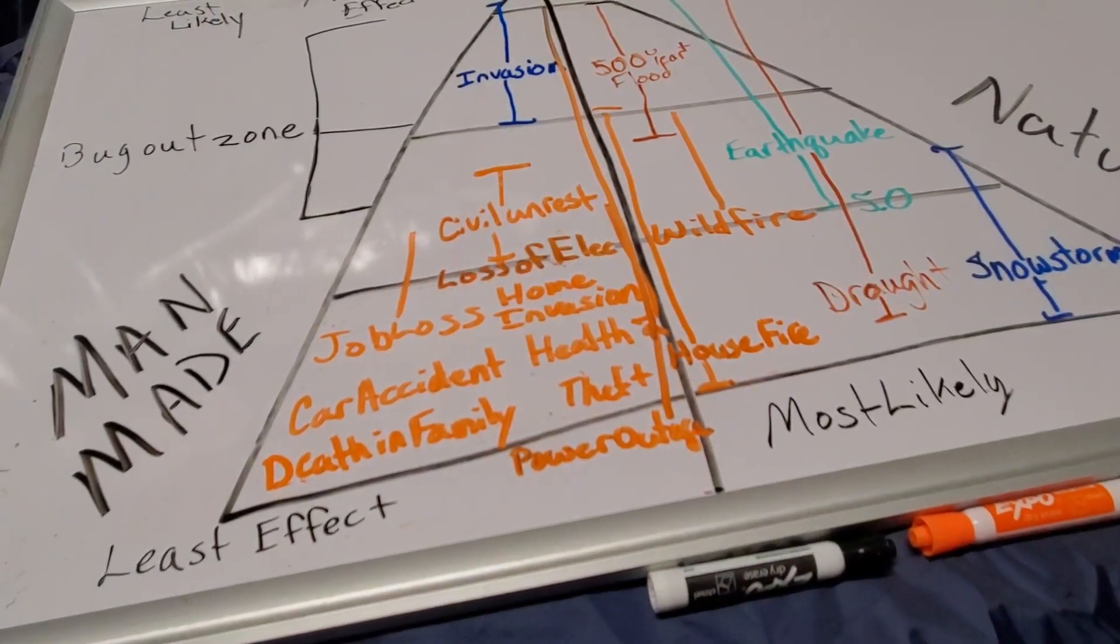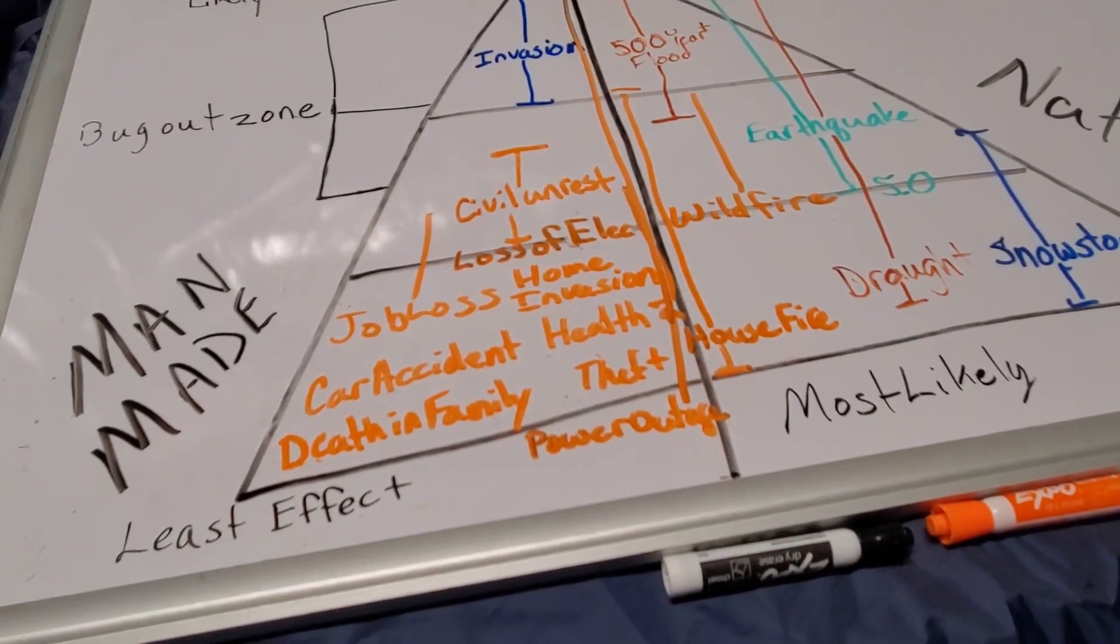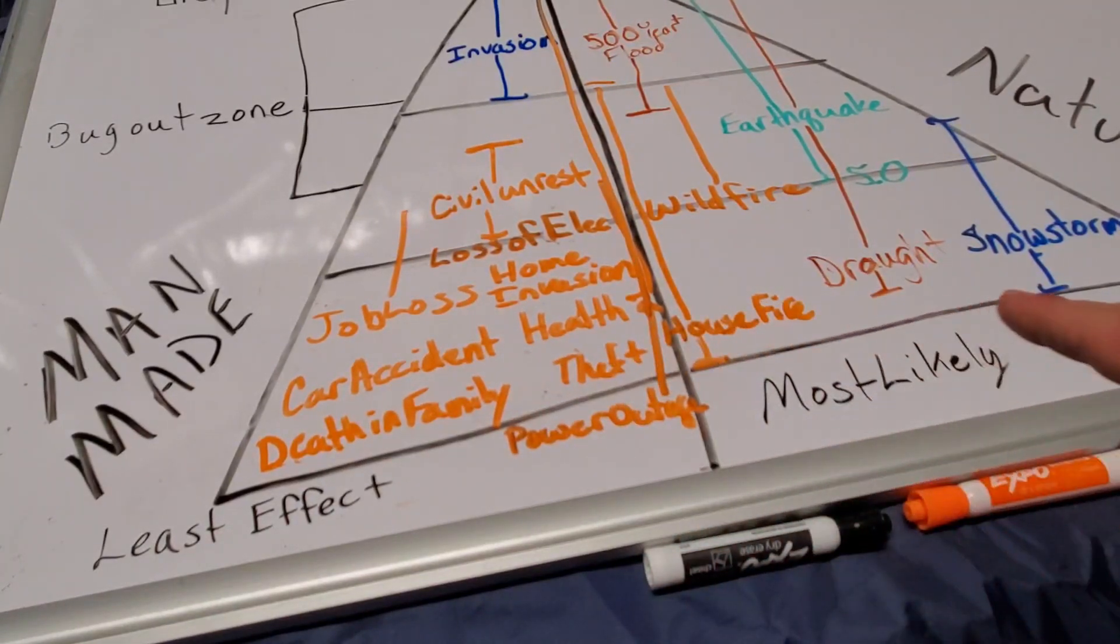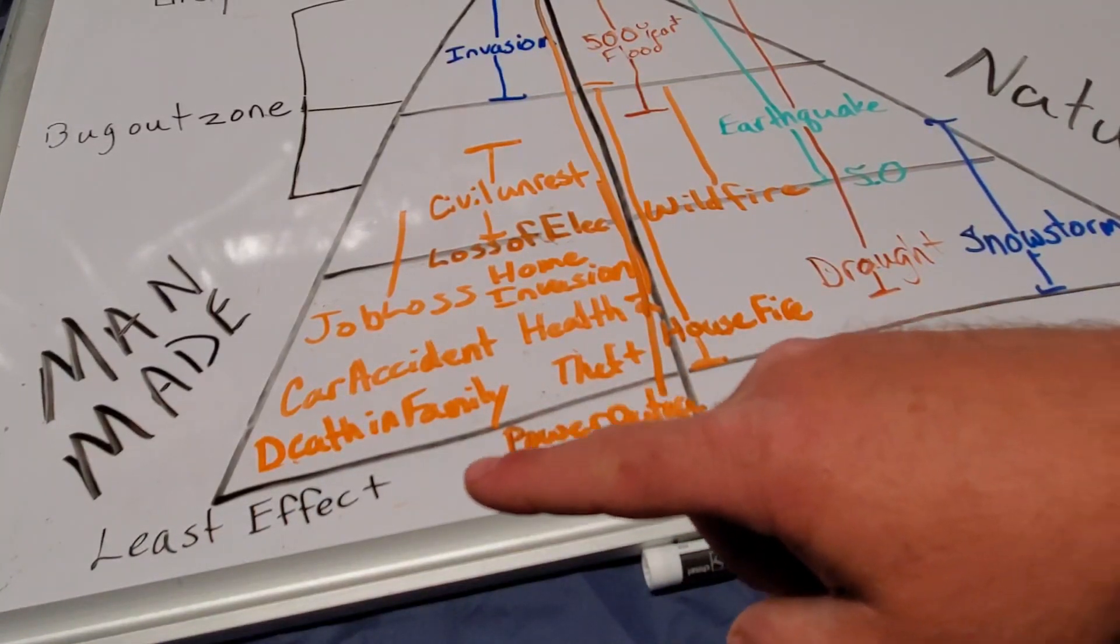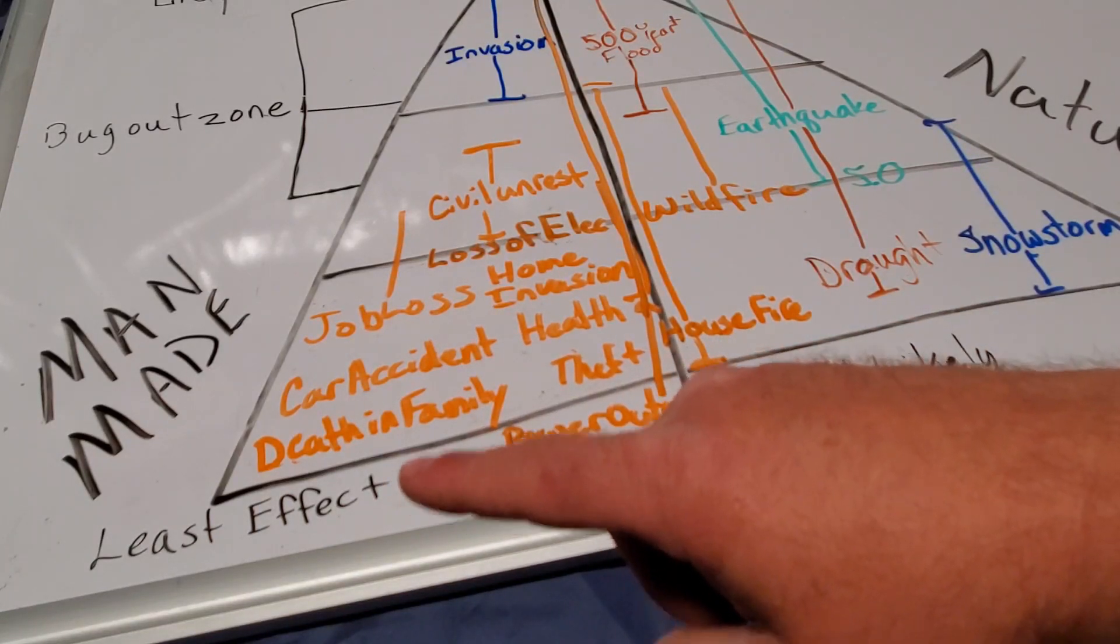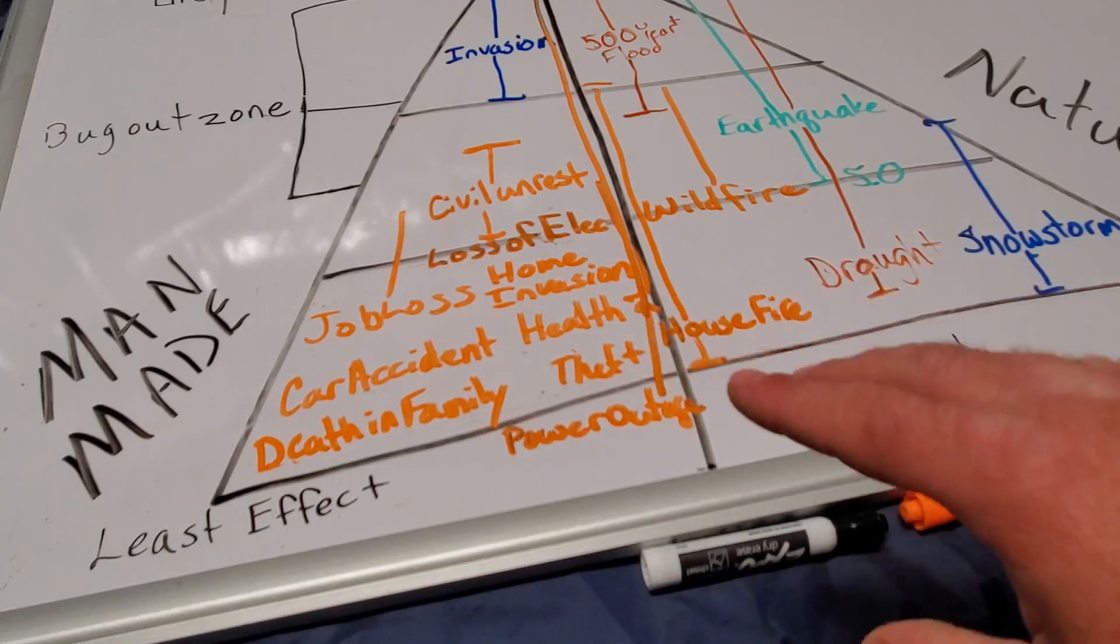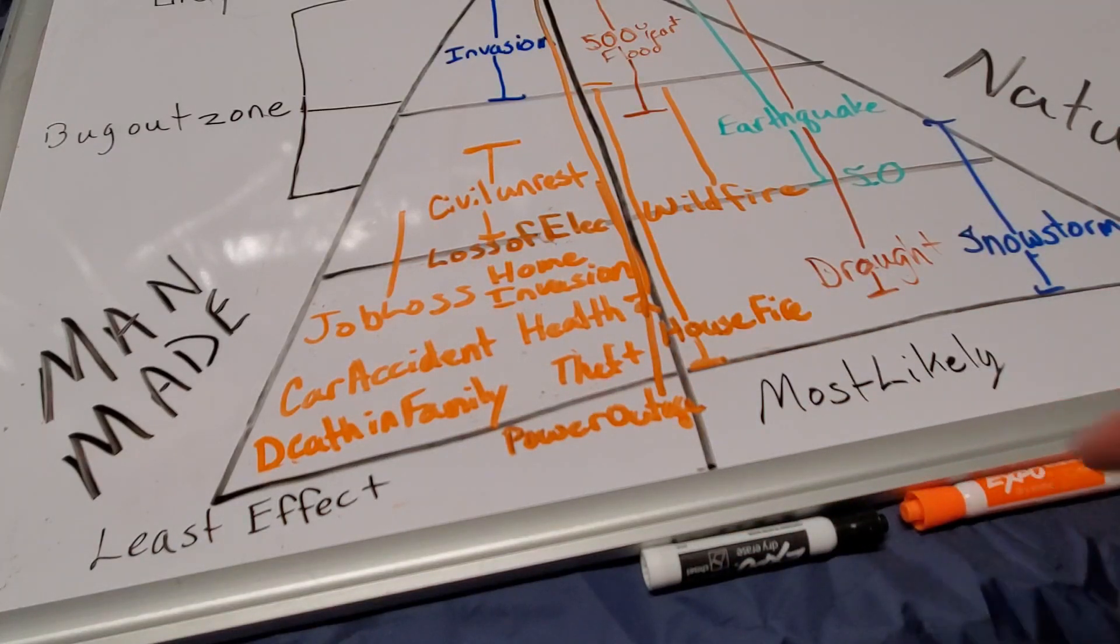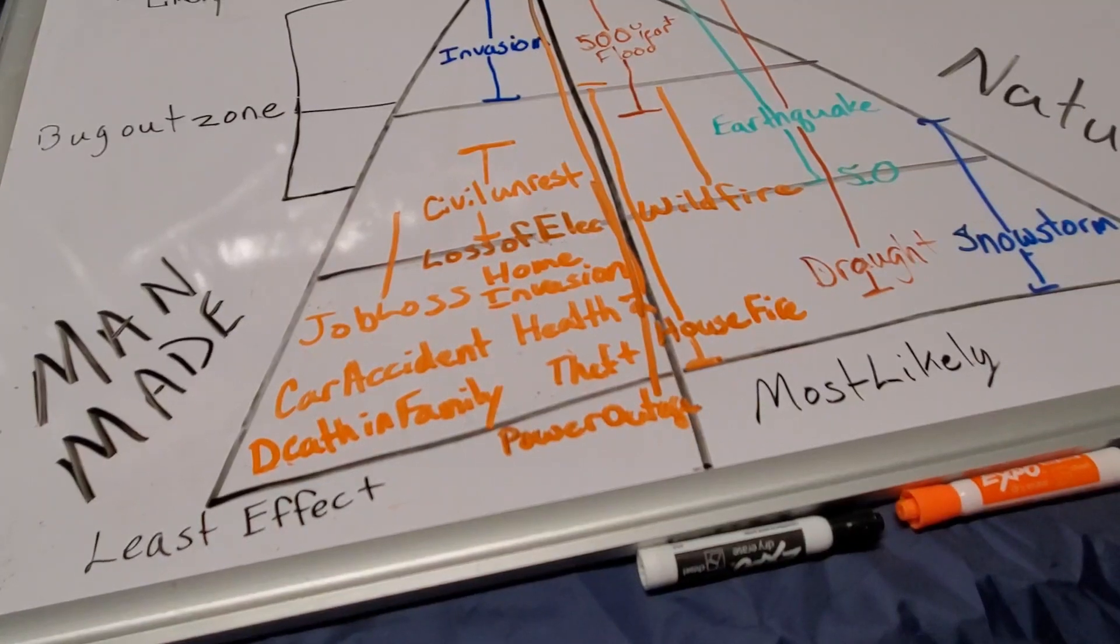Your base of the triangle is 90% of the things you're going to deal with in your life that you need to prepare for. These don't have the least effect on you as long as you're doing some basic preparedness, but they're the most likely to happen, especially where you live. I think that's the key.